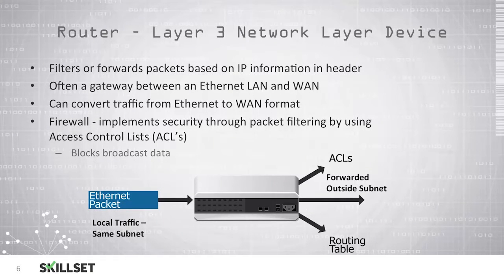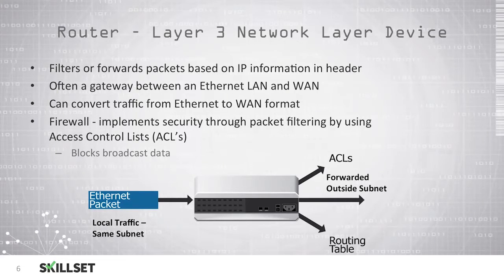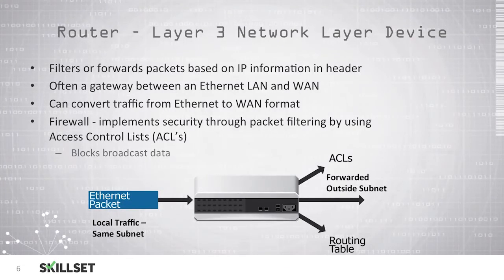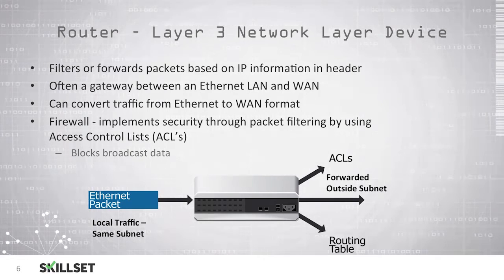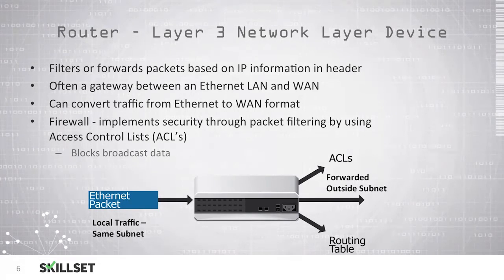Routers are devices that operate at the network layer or layer 3 of the OSI model. These devices forward packets based on IP or internet protocol address information found in the header. They often act as a gateway between an Ethernet LAN and a WAN, converting traffic from Ethernet format to WAN format. They typically act as firewalls and are able to implement security through packet filtering using access control lists. Routers also block broadcast data to prevent it from being broadcast from a local area network to the entire internet.